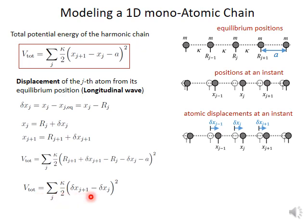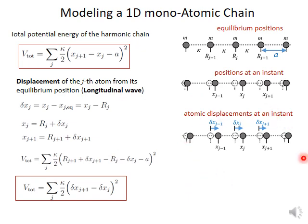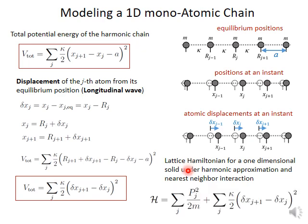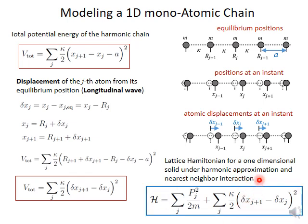The total potential energy of the lattice simplifies: the difference of displacements between neighboring atoms tells us whether there is any potential energy. If the displacement difference is zero, the potential energy is zero; otherwise we square the displacement differences, multiply by the spring constant, and sum over all pairs to get the total potential energy. We have now written the total potential energy of the one-dimensional harmonic chain in terms of atomic displacements. We can then write the total lattice Hamiltonian under harmonic approximation with nearest-neighbor interactions.